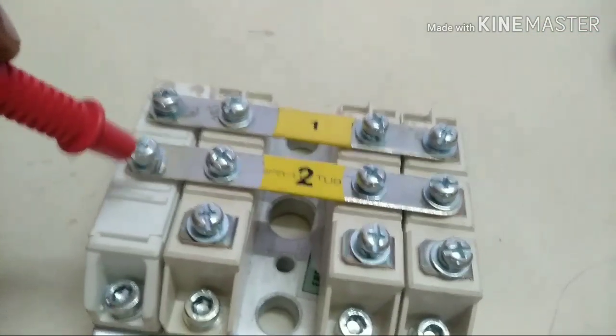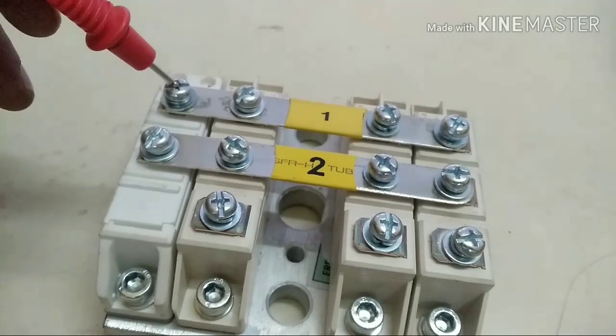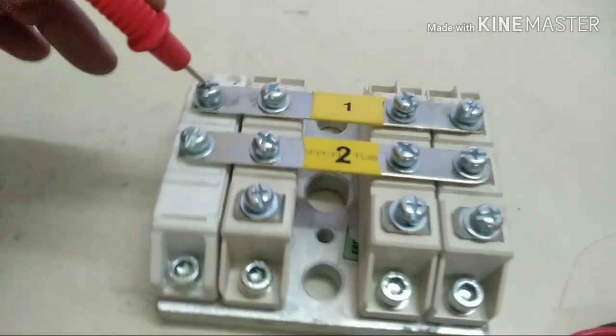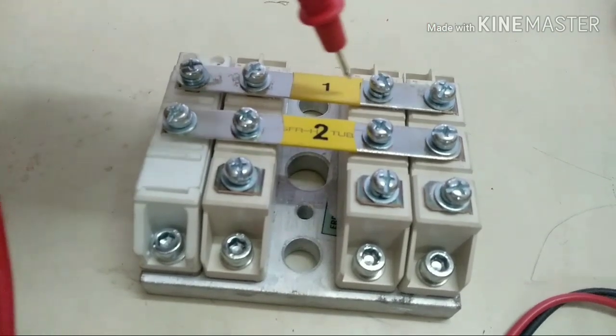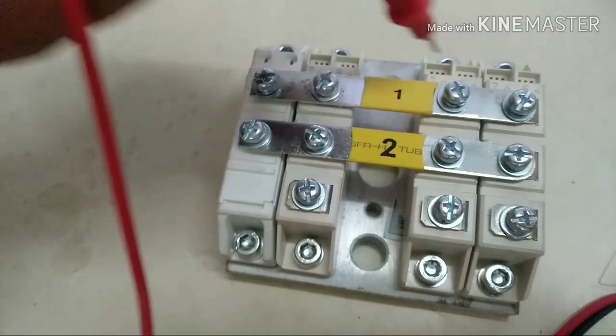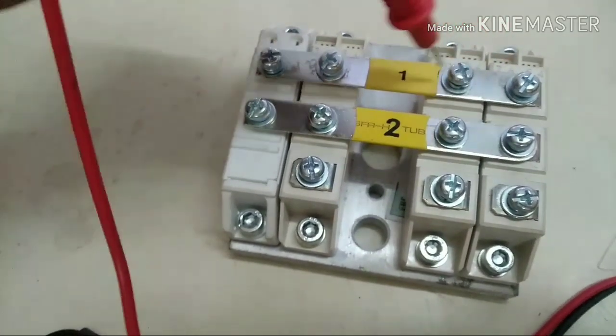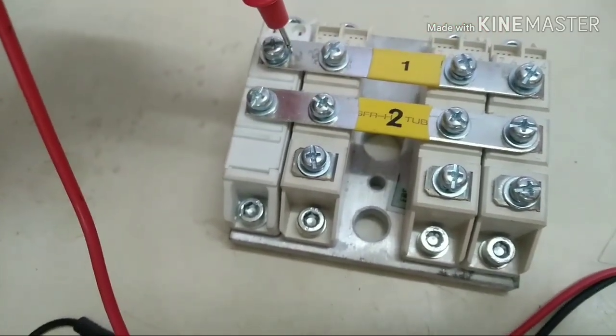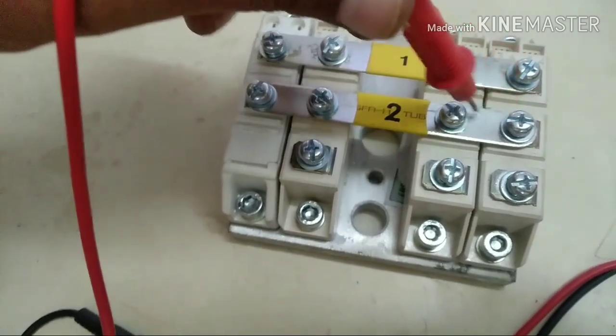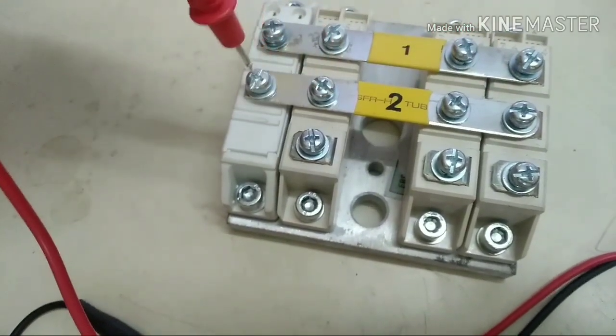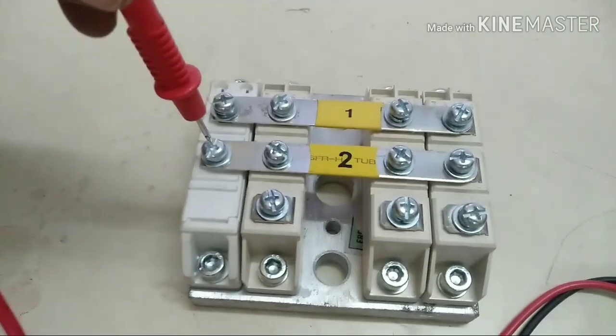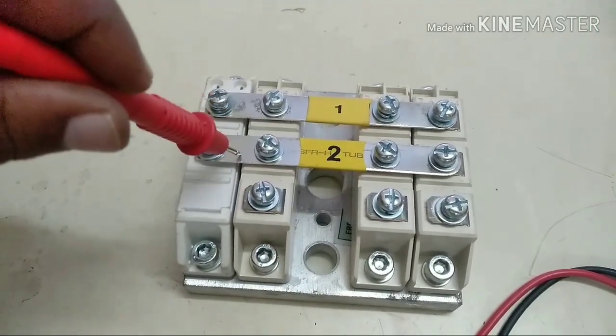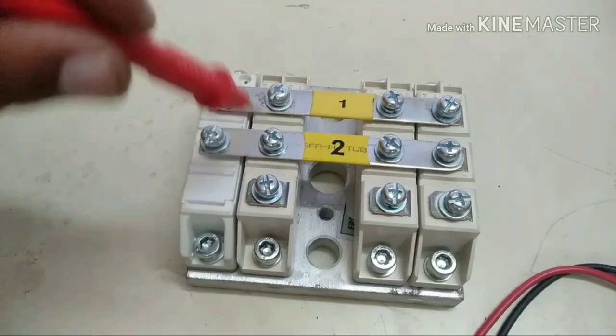We have placed two shorting plates on the RRA assembly. This particular plate shorts all the three number terminals of the blocks. This is the first shorting plate, and this is the second shorting plate which shorts all the two number terminals of the RRA.